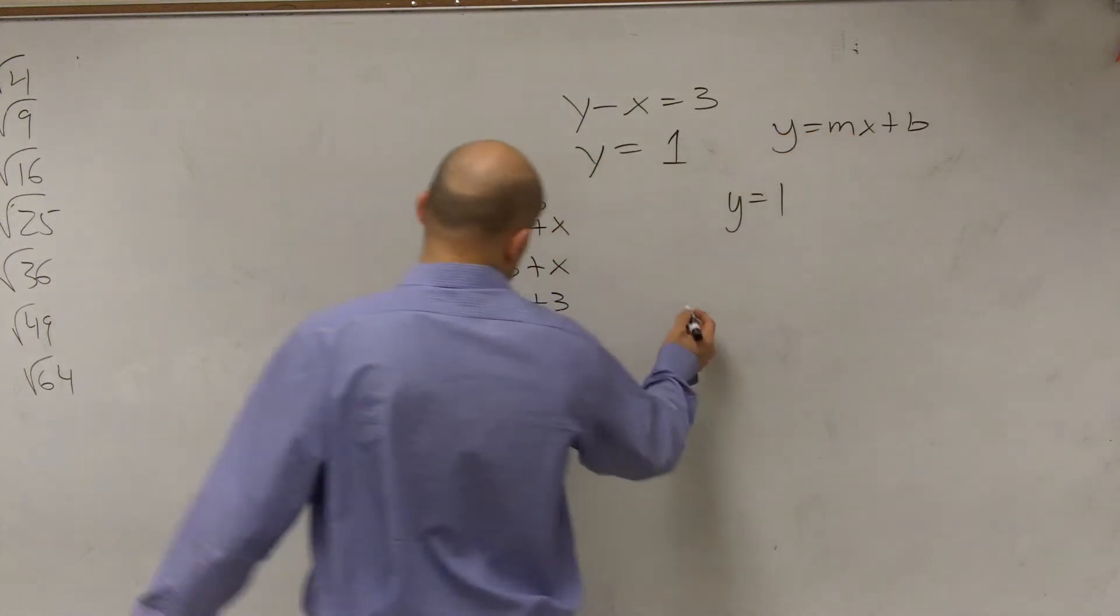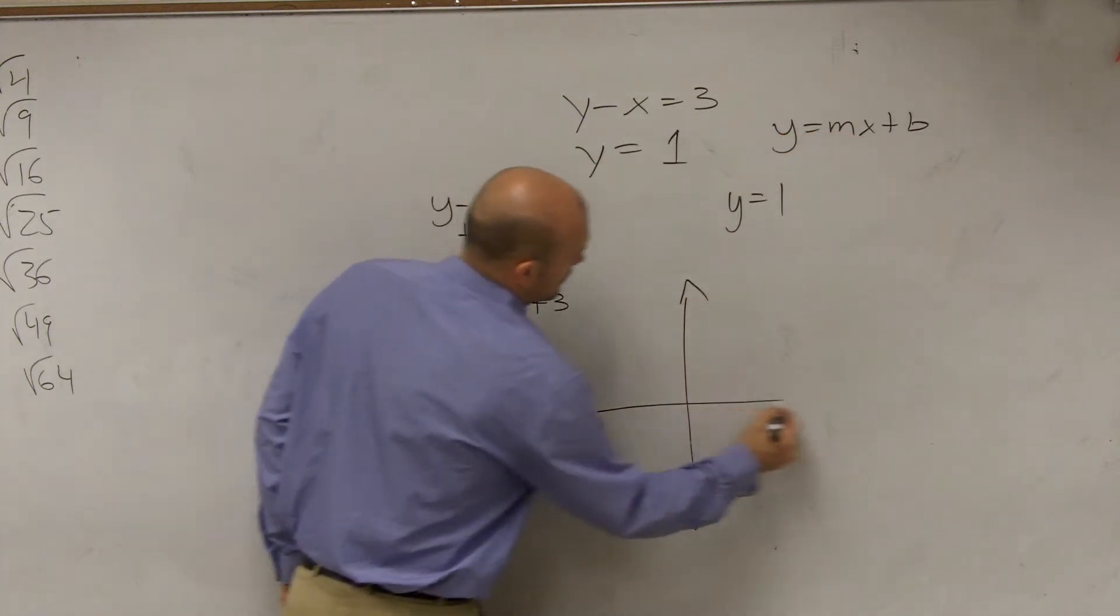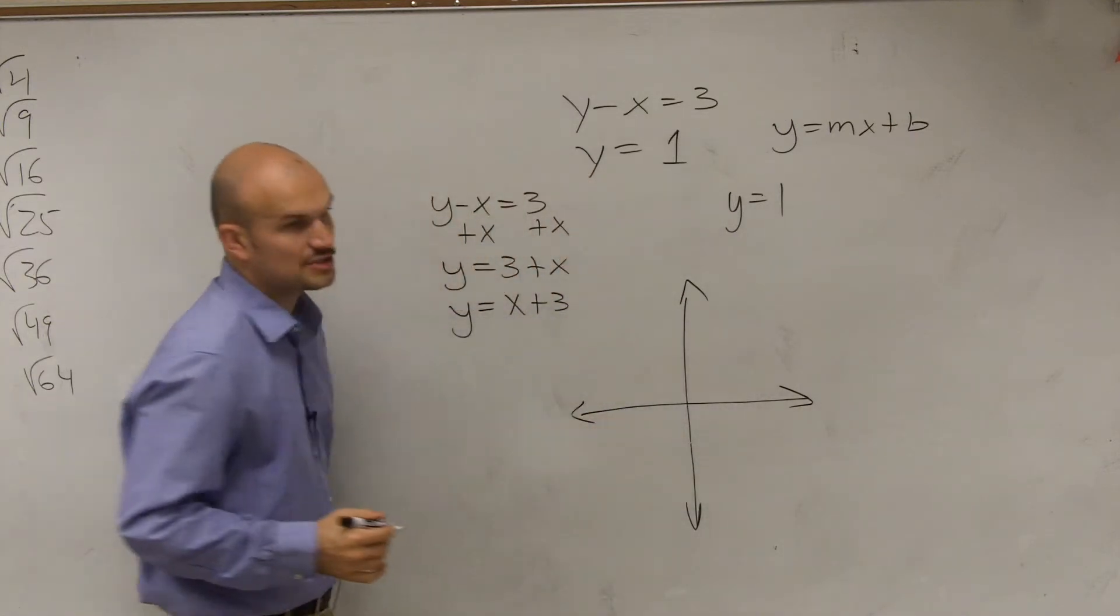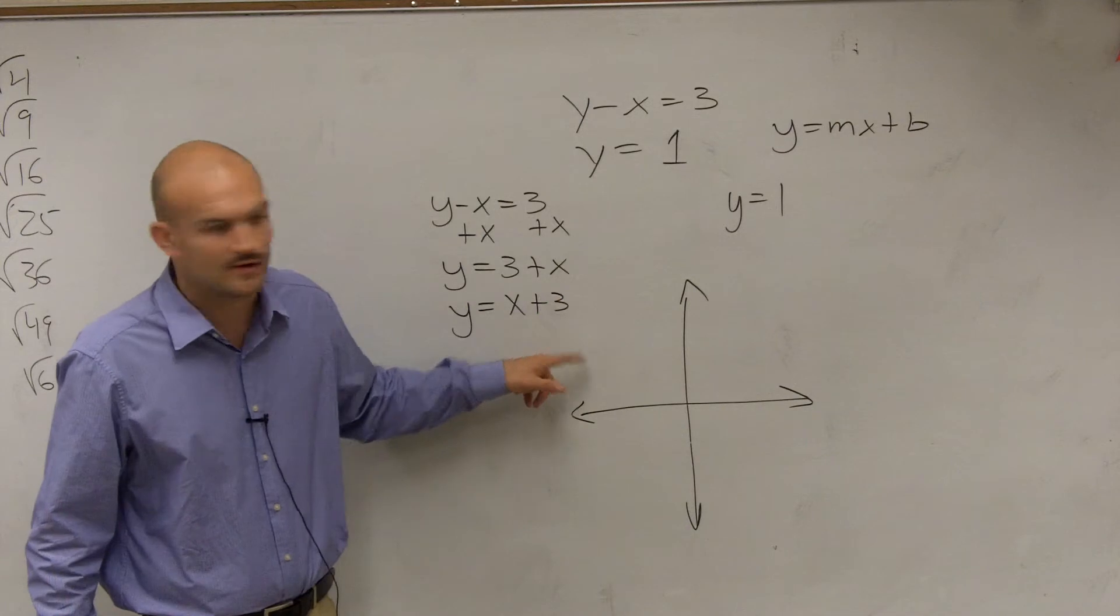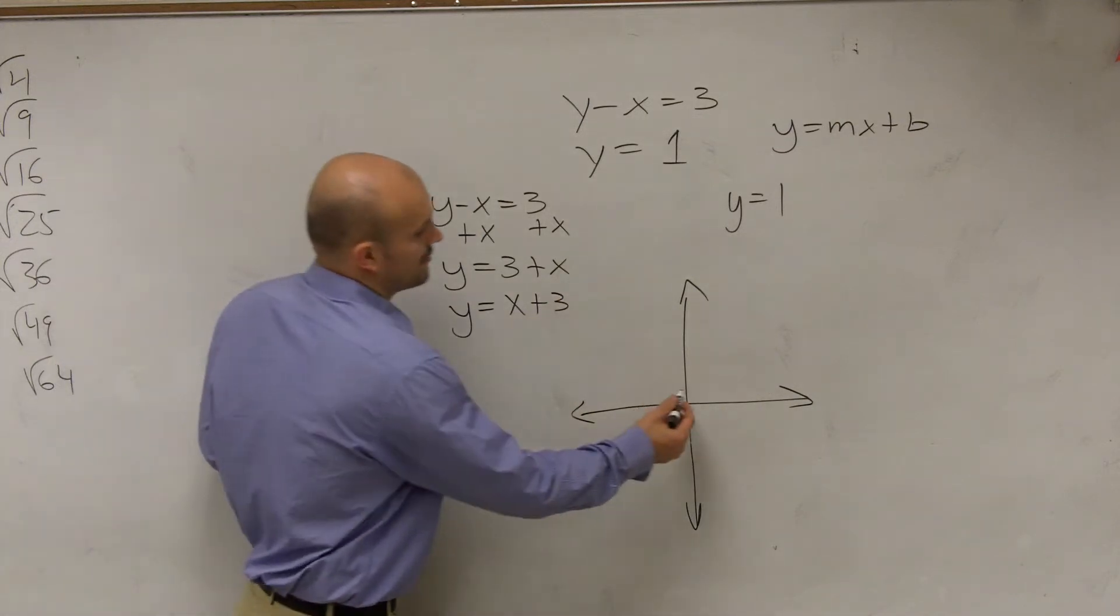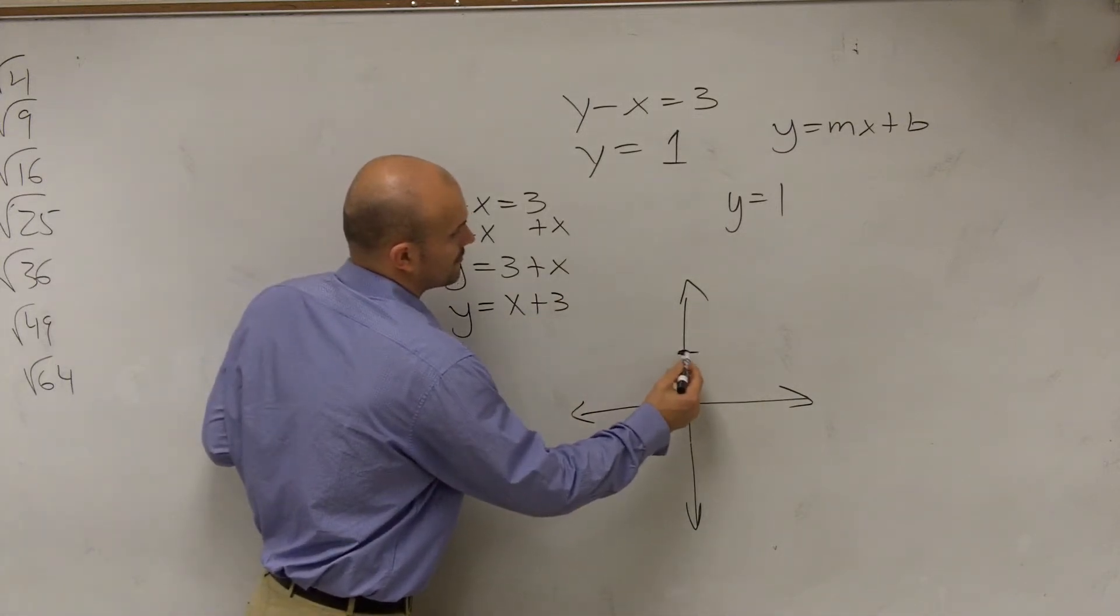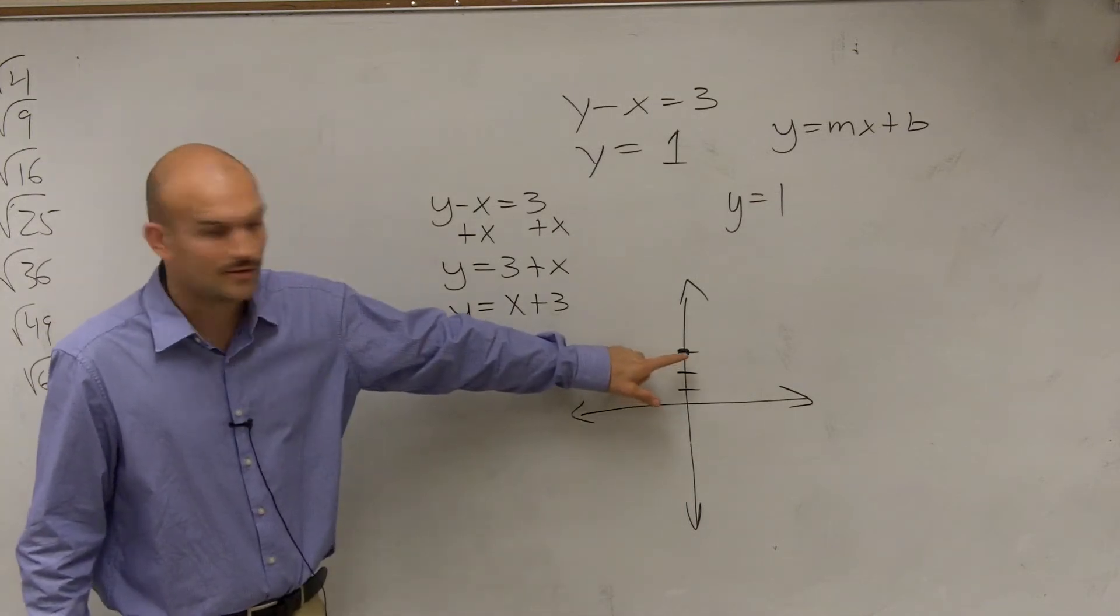So to graph this, what we need to do, again, is determine the y-intercept. So we look at our equation. For this one, let's do this one first. The y-intercept with this one is at 3. 1, 2, 3. Okay, so the y-intercept is at 3.